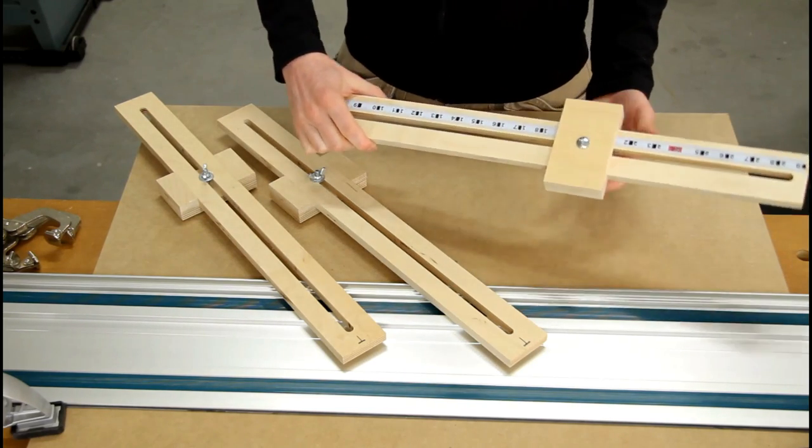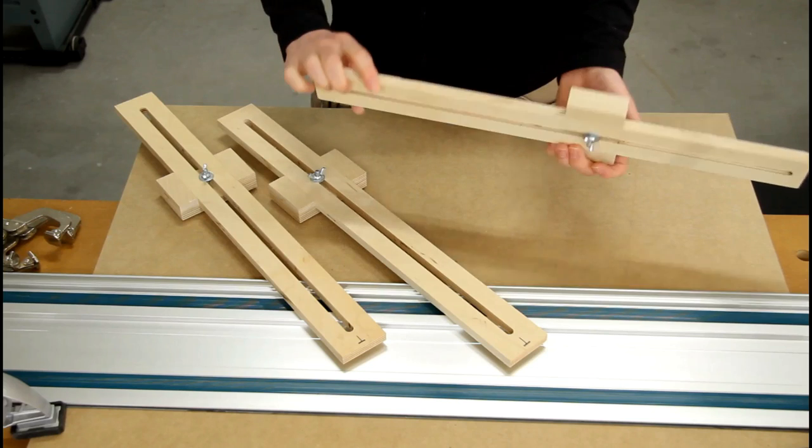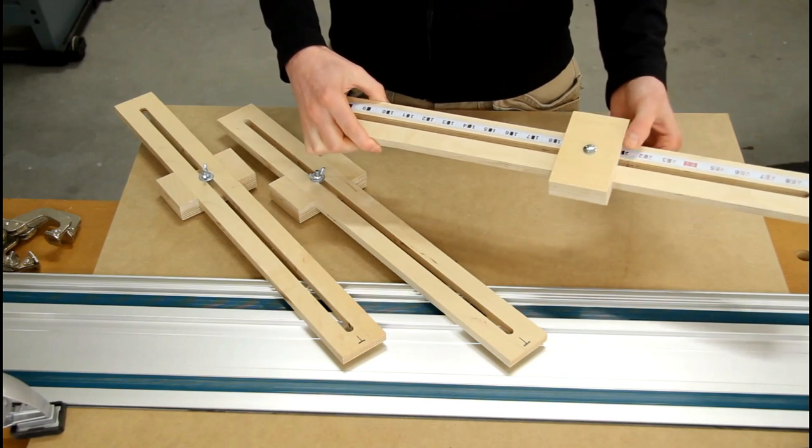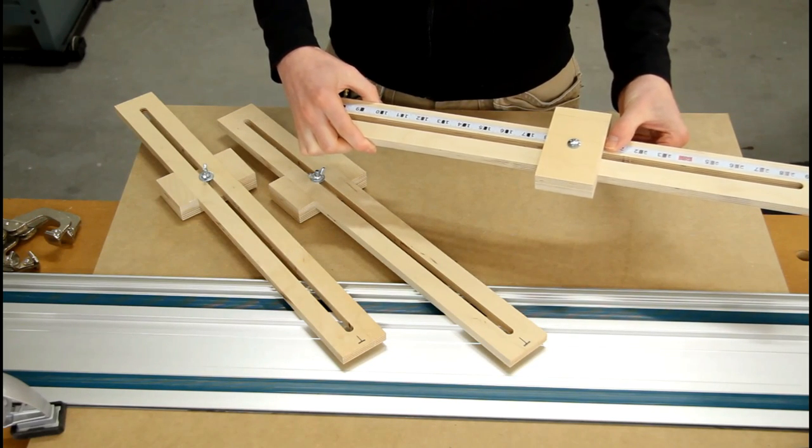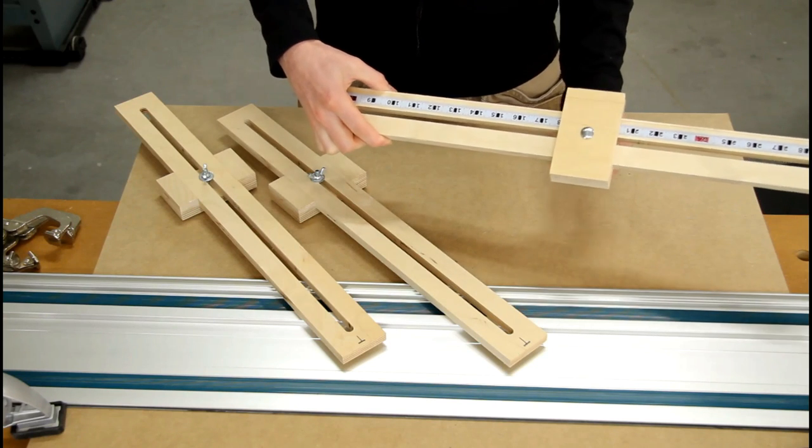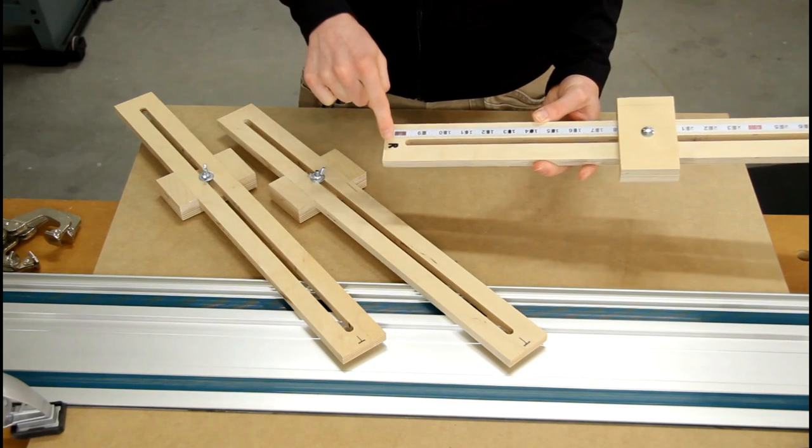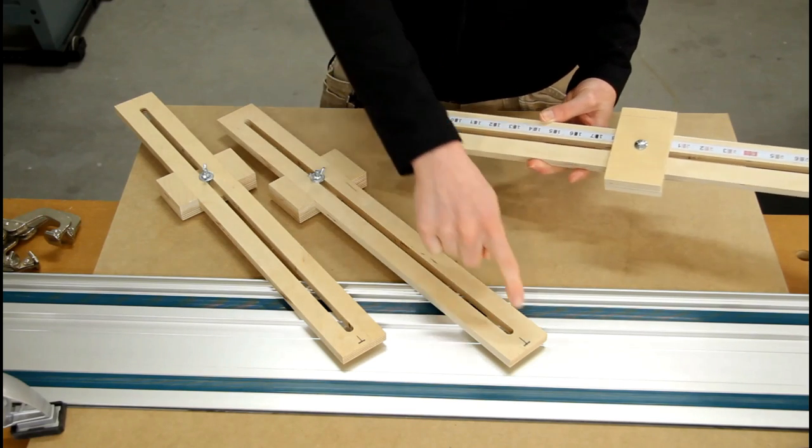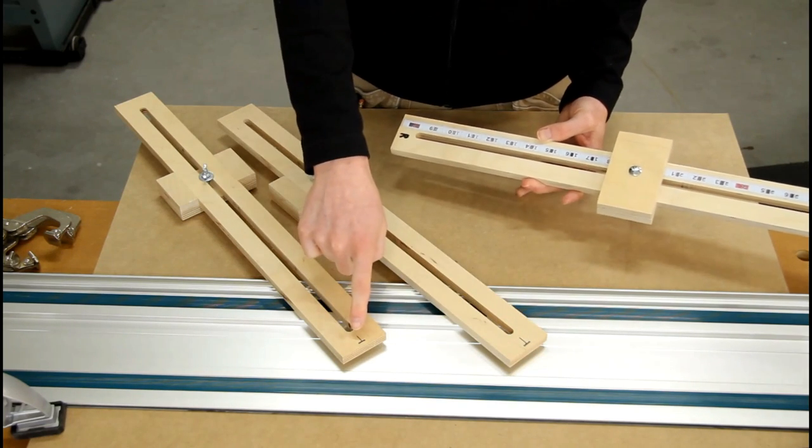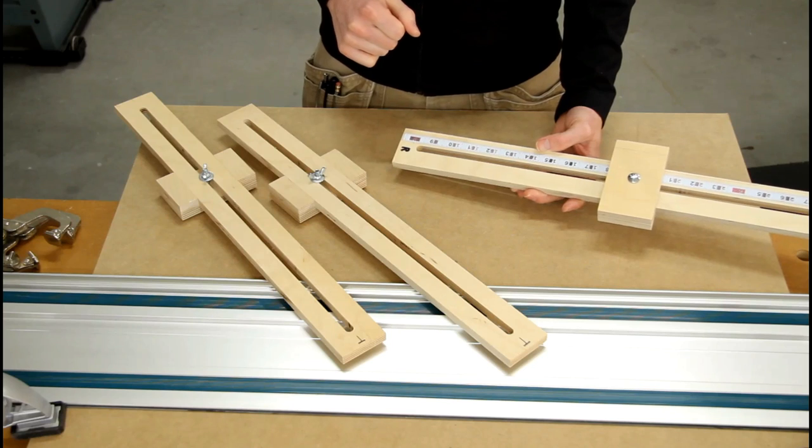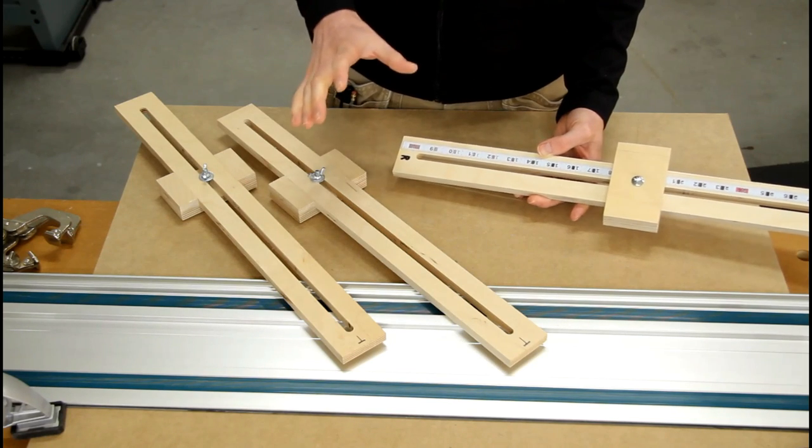So to use the setting jig, you just unlock the wing nut on the back side, and then slide it along to the measurement you want. So in this case, we'll lock it down to 18 inches. And I've put a letter R on this end of the setting jig, and a letter T on the ends of the parallel guides. So that keeps everything straight.